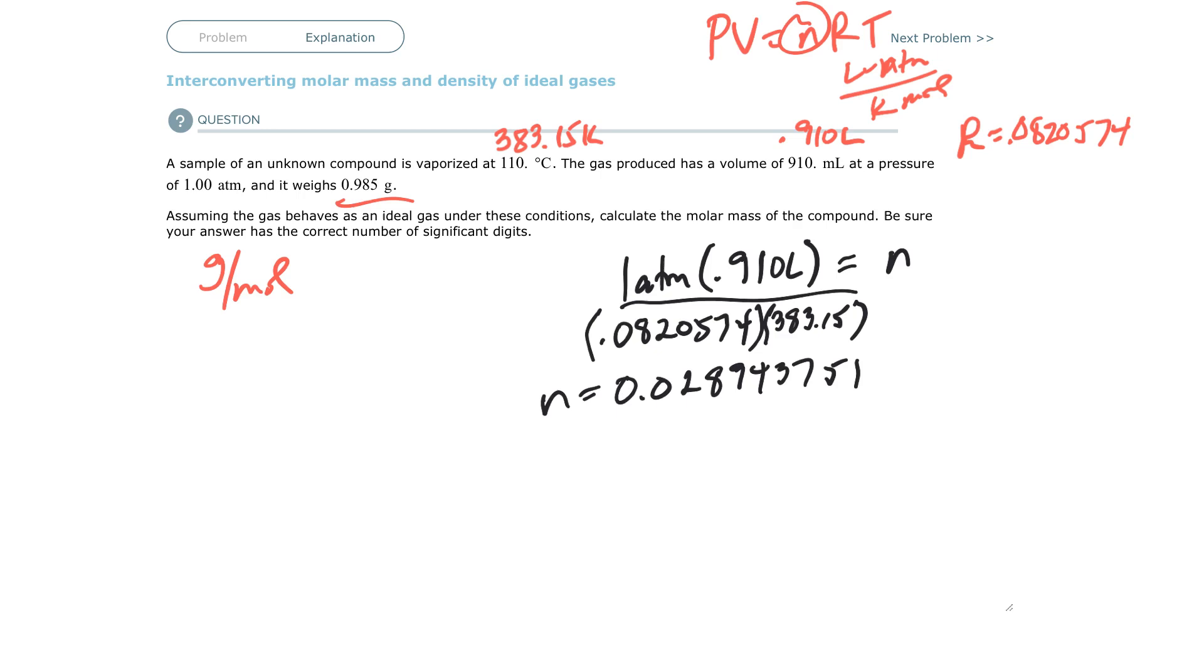That's the bottom number. We've got grams per mole. So grams is 0.985 grams over 0.028943751. And I'll round at the end. I've got the molar mass equals 34.03152573 grams per mole.